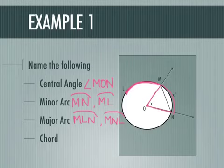And then a chord is just a segment anywhere on the circle. So I would say right now we have chord M N listed.